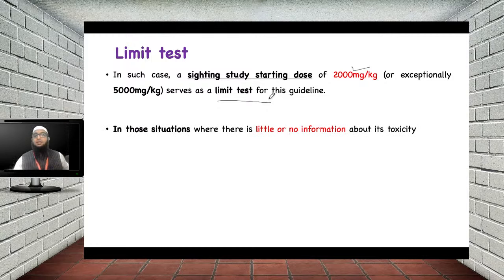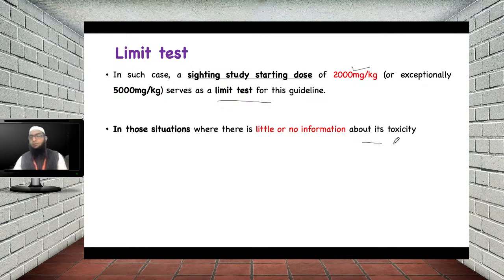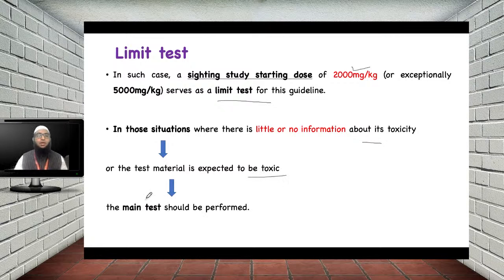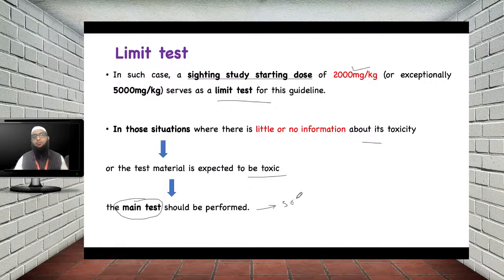If the drug is already known to be safe, you can also test at 5000 mg/kg; if no toxicity is shown, it is classified as unclassified with toxicity above 5000 mg/kg. However, if mortality occurs in two to three animals, you should not classify the drug — instead, give the next lower dose of 300 mg/kg to the animals and classify based on those results.